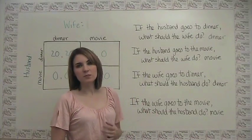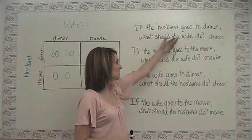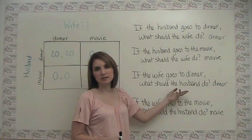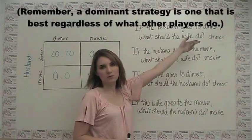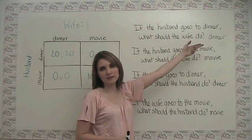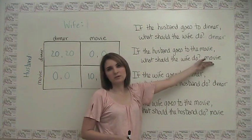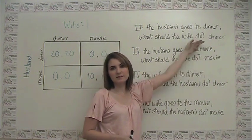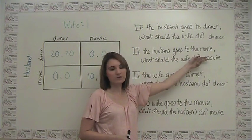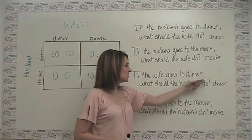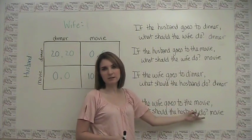This example differs from the previous one because there is no dominant strategy in this case. If the husband goes to dinner, the wife wants to go to dinner. If the husband goes to the movie, the wife wants to go to the movie. We don't have a consistent best choice like we did before. Similarly, the husband also doesn't have a consistent best choice.